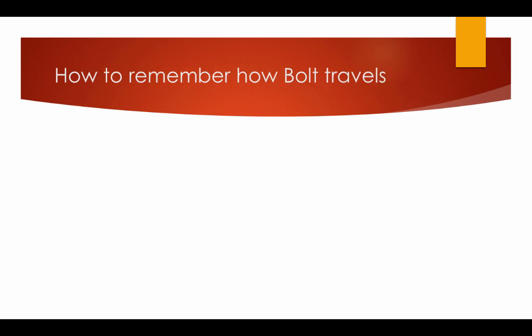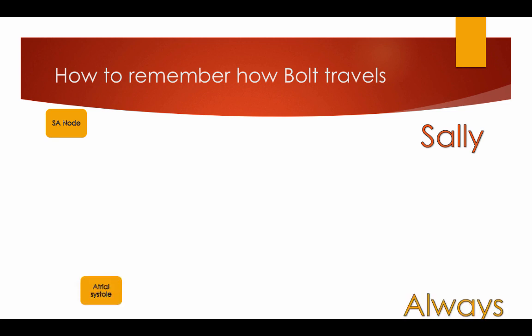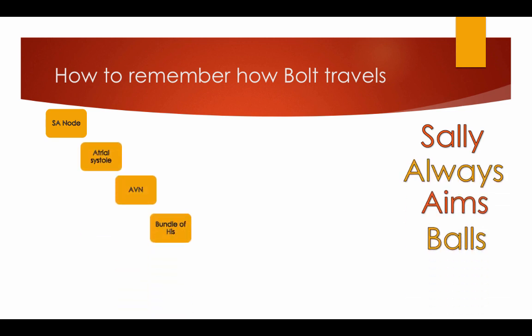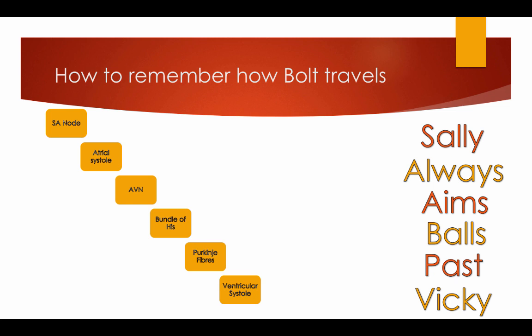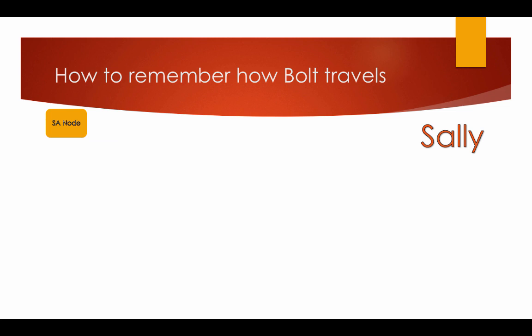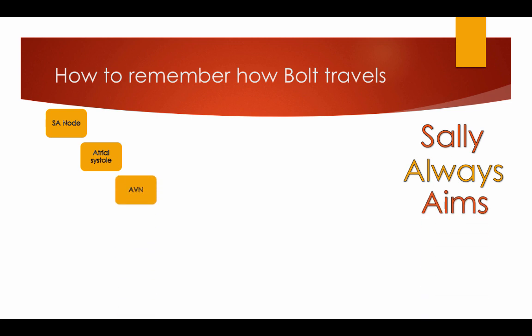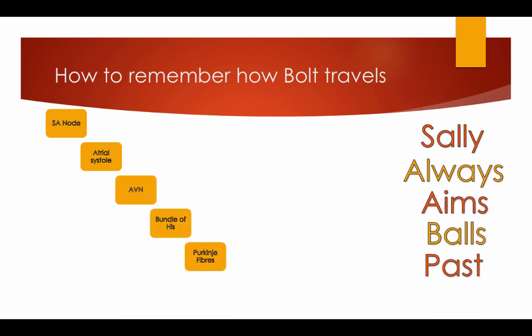How to remember how Bolt travels: Sally always aims balls past Vicky. SA node, atrial systole, AVN, bundle of His, Purkinje fibres, and ventricular systole. Sally always aims balls past Vicky.